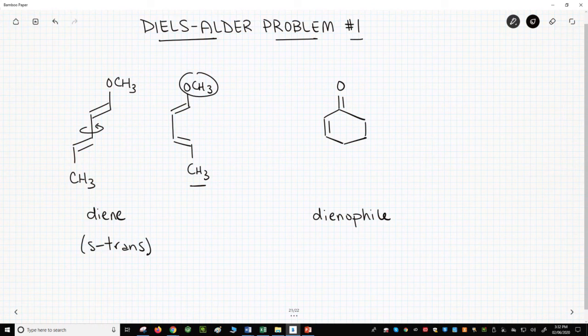As an EDG, we'll give the methoxy an imaginary minus charge. Now just alternate charges through the diene carbons: plus, minus, plus, minus. Our dienophile has an EWG, the carbonyl. We can now see how the ends of the diene and dienophile must line up. The plus end of the diene matches up with the minus end of the dienophile. Fantastic.